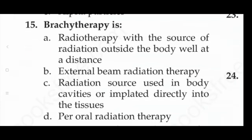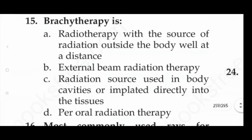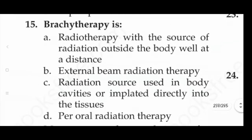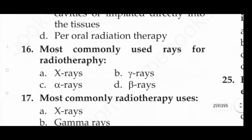Next question: brachytherapy is — option A: radiotherapy with the source of radiation outside the body at a distance, option B: external beam radiation therapy, option C: radiation source used in body cavity or implanted directly into the tissue, option D: peroral radiation therapy. The answer is option C — radiation source used in body cavities or implanted directly into the tissues.